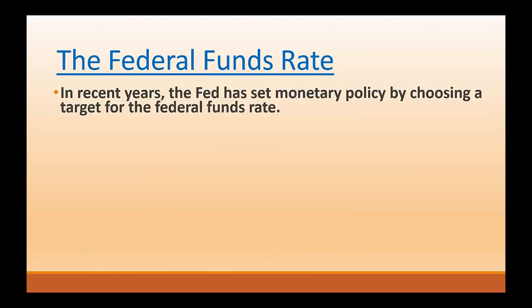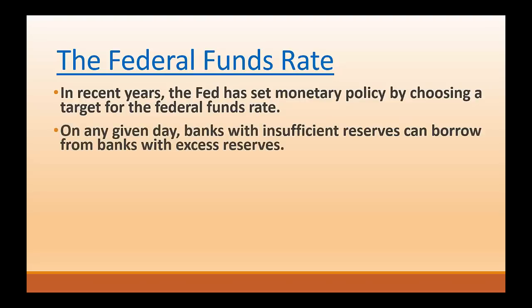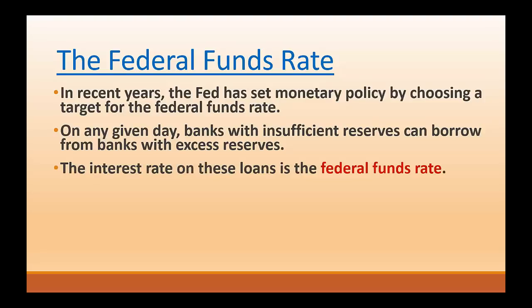The Fed conducts its monetary policy by targeting short-term interest rates. In recent years, the Fed has set monetary policy by choosing a target for the federal funds rate. So what is the federal funds rate? On any given day, banks with insufficient reserves can borrow from banks with excess reserves. A bank may find itself short at the end of the day, and the Fed has a reserve requirement in place. Banks can choose to borrow from each other, and if they're really stuck, they can always go to the discount window to borrow. The interest rate on these loans that banks get from each other is referred to as the federal funds rate.